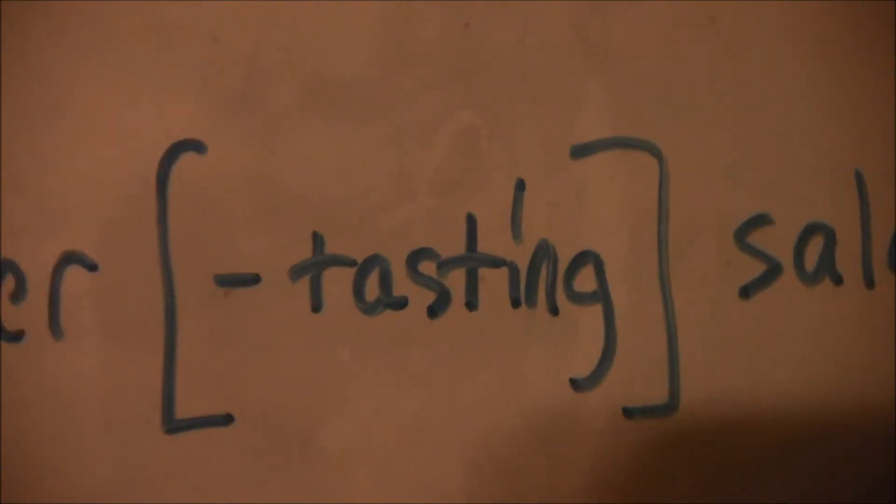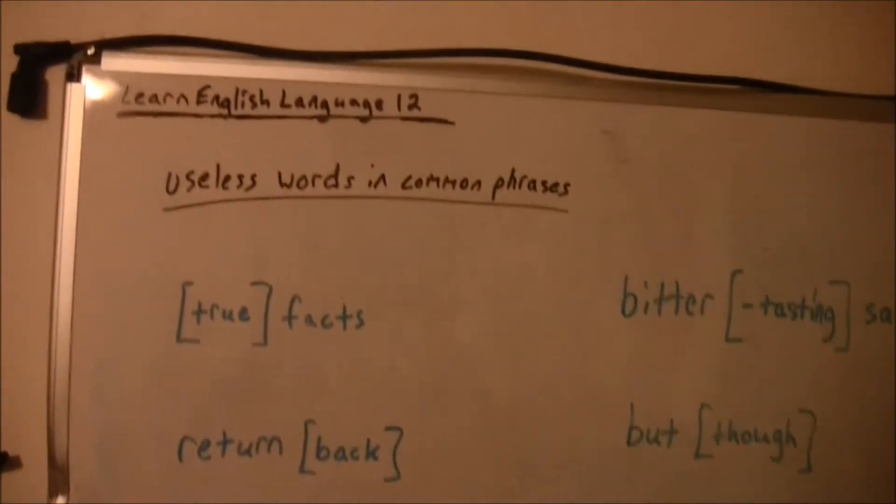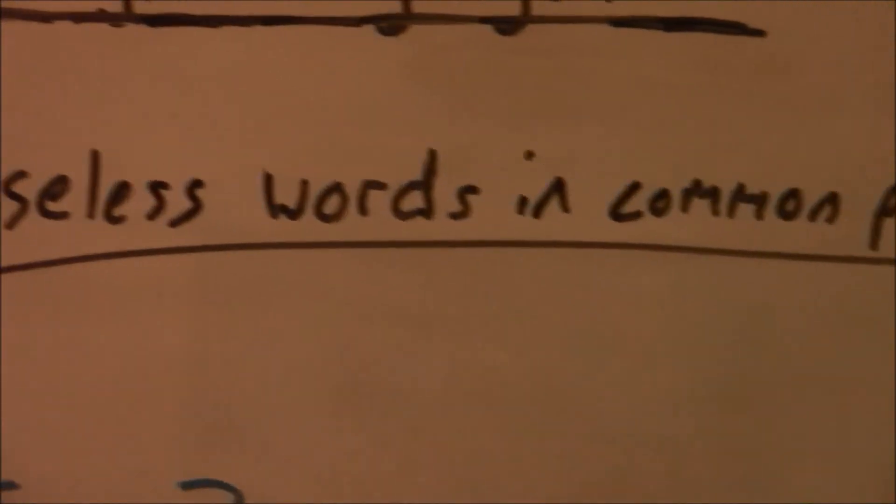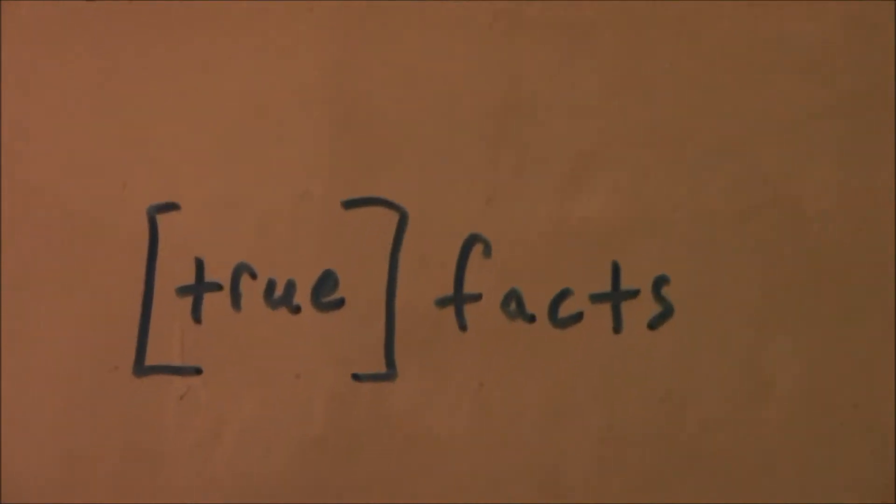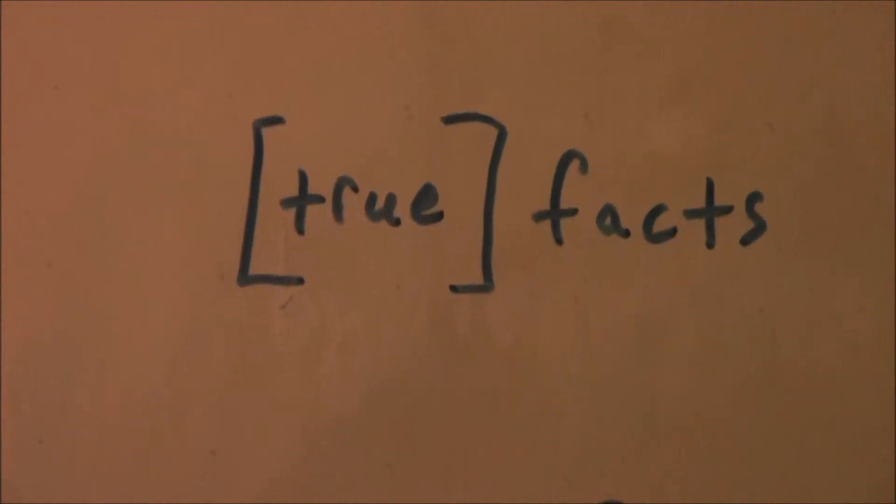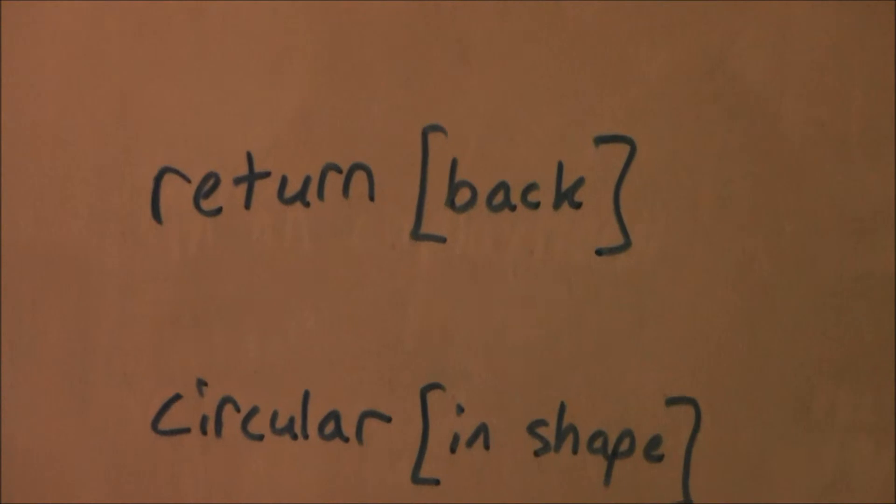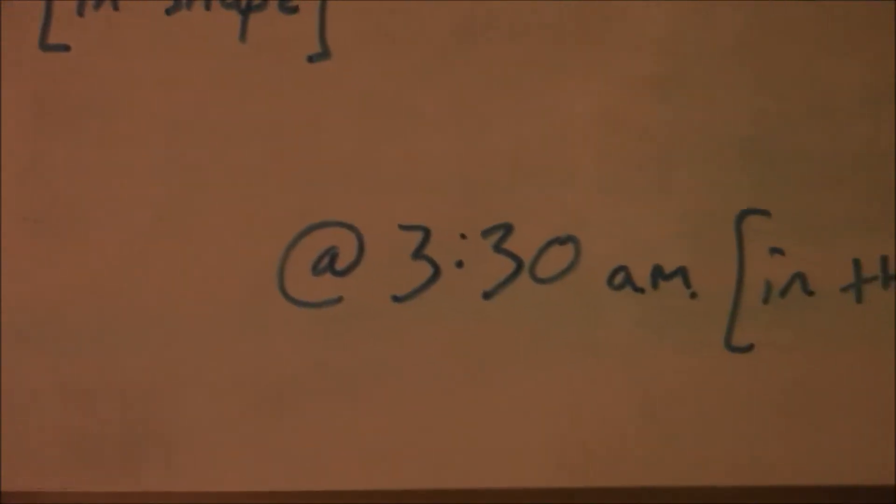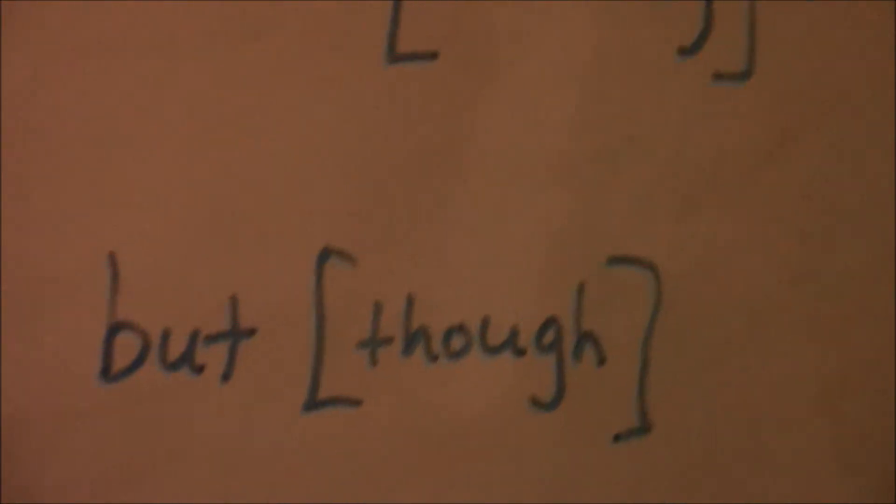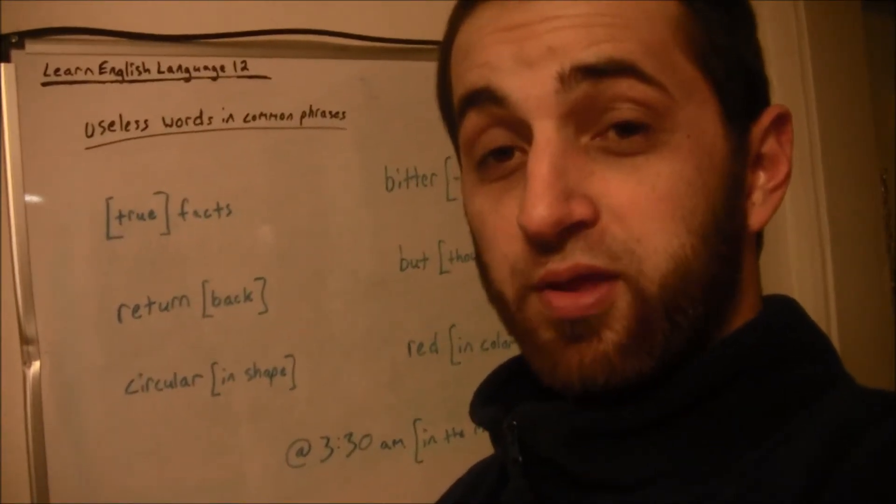So to review, we're talking about useless words and common phrases. Examples: true facts, return back, circular in shape, at 3:30 a.m. in the morning, red in color, but though, and bitter tasting salad. You don't need to use the words in the brackets.